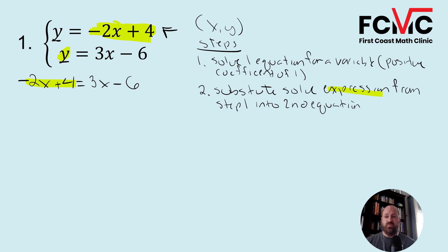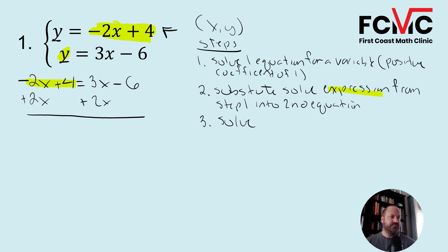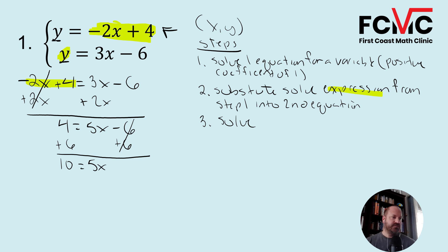We've now got an equation with one variable — just x — so we can solve it. I'm going to add 2x to both sides and combine like terms: we get 4 equals 5x minus 6. Adding 6 gives us 10 equals 5x. Dividing by 5, we get x equals 2.